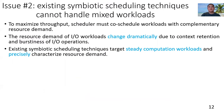Second, existing symbiotic scheduling techniques cannot handle mixed workloads for high processor throughput. To maximize throughput, CPU schedulers must co-schedule workloads with complementary resource demand. Existing symbiotic scheduling techniques cannot be used to maximize throughput for mixed workloads, because they target steady computation workloads with precisely characterized resource demand.